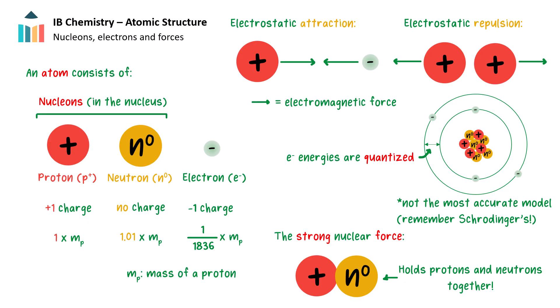The protons in the nucleus repel each other also via the electromagnetic force. This force is termed electrostatic repulsion. The nucleus is only stable because this force is counteracted by an attractive force between the neutrons and the protons. That force, called the strong nuclear force, only operates over very short distances. All nuclei with more than one proton must contain neutrons, as these contribute to the attractive strong nuclear force without increasing the repulsive electrostatic force.